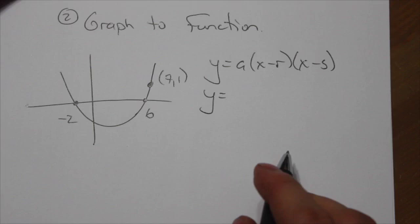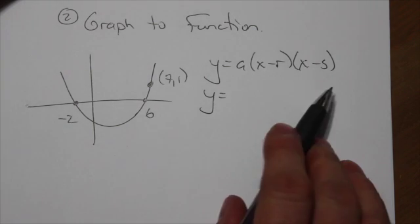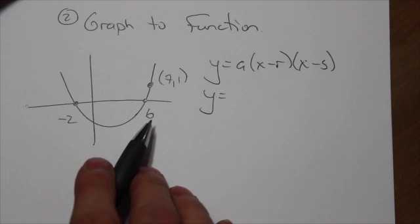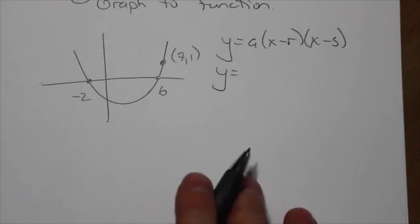And just like we did with the vertex form, right away we already know two-thirds of the problem. I know that the numbers negative 2 and 6 are going to go in there. Remember our discussion here: